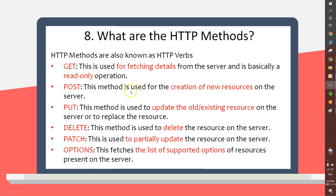POST is used for creation of new resources on the server. PUT is used to update an existing resource on the server or replace it entirely. DELETE is used to delete a resource on the server. PATCH is used to partially update a resource. OPTIONS fetches the list of supported options of resources present on the server. Let me explain these using Postman.